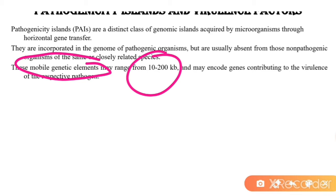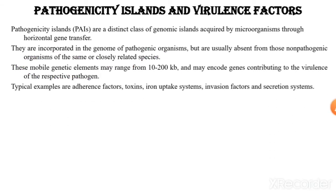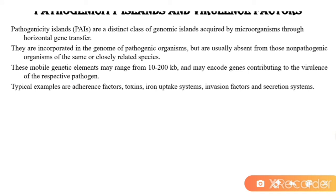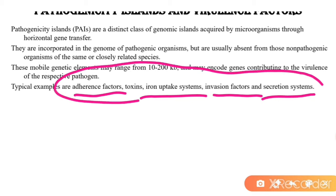PAIs may encode genes contributing to virulence. Typical examples are adherence factors, toxins, iron uptake systems, invasion factors, and secretion systems. These factors are important as virulence factors for the pathogen when it enters the host and wants to establish itself.